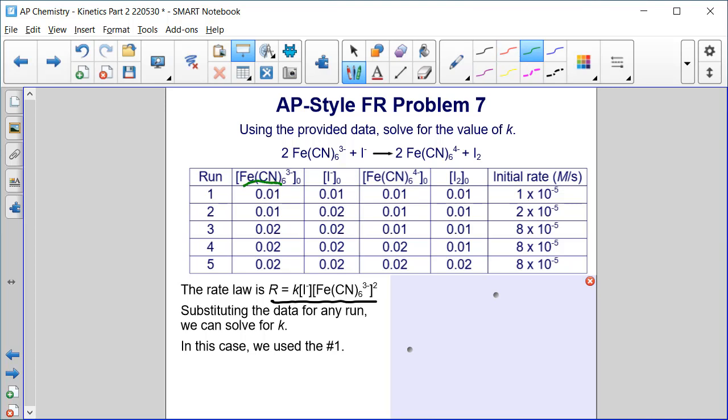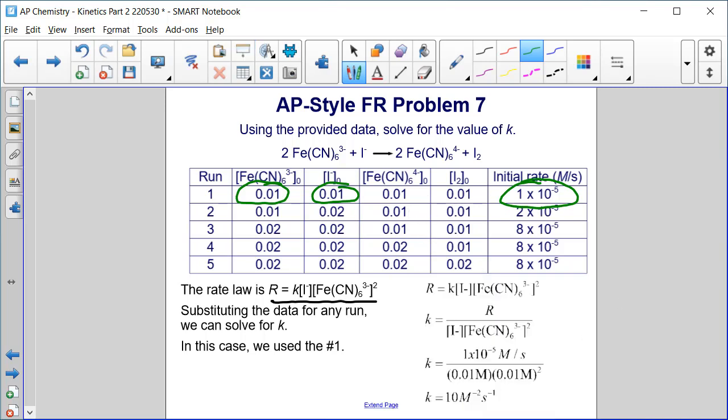We need Fe(CN)6^3-, I minus, and the rate. All we need to do is substitute those values into our rate law.